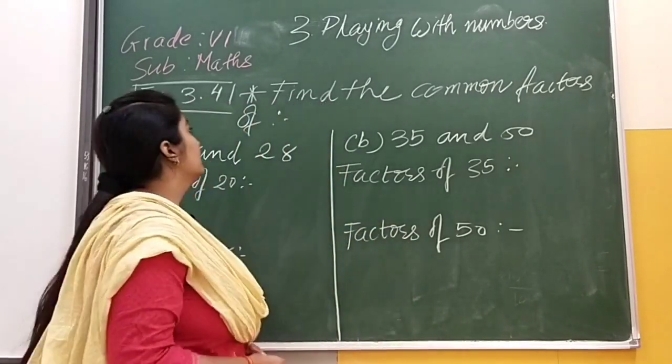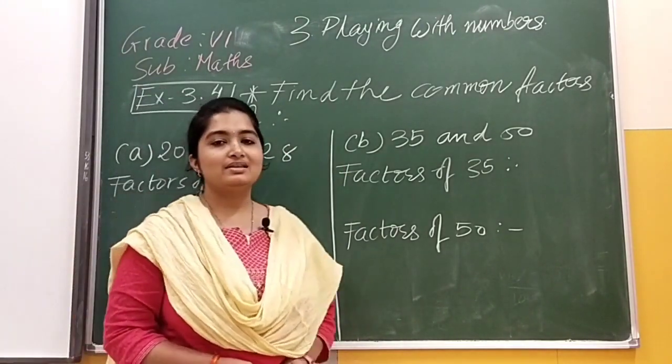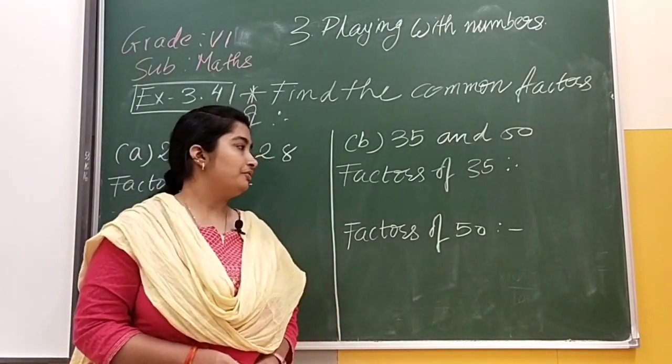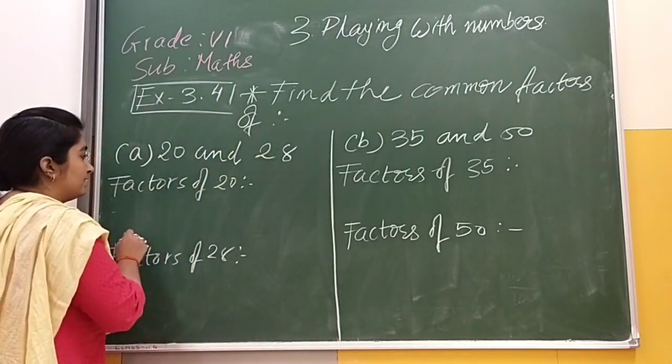Here the question says that find the common factors of 20 and 28 and second one is 35 and 50. Now you know how to find the factors. We will find here factors by U method.